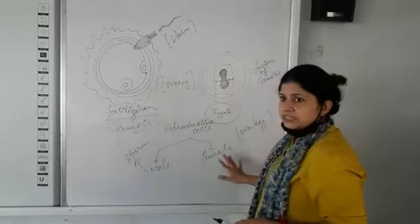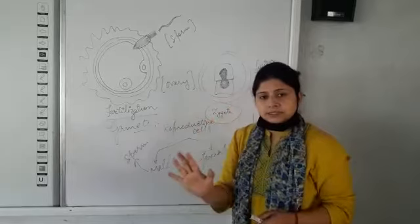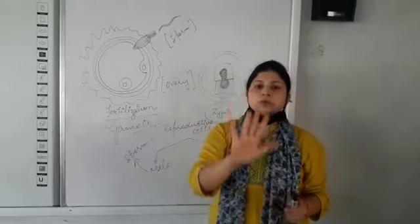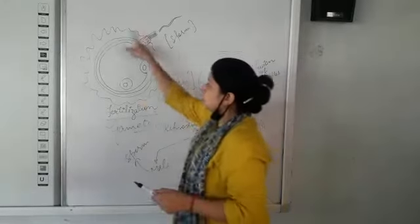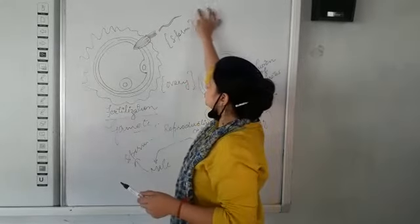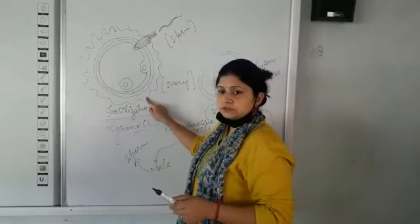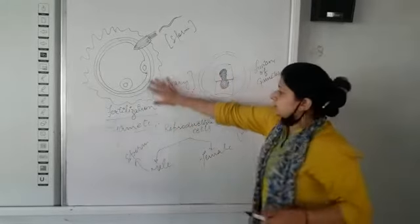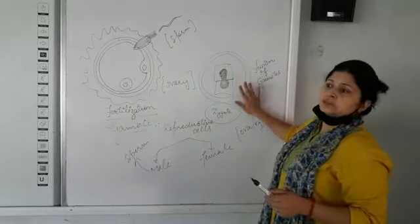From this, we understand that reproductive cells are produced from both female and male. Fertilization is the fusion of the sperm cell and the egg released from the female body. After fertilization, a zygote is formed.